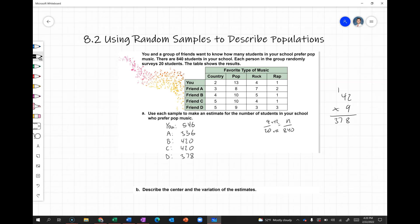So now we have you and your friends, five different people have these different random samples. If we want to get a better idea of what is representative of our population, the full school, we could then describe the center and the variation of the estimate. So you could find the mean, you could find the median, that sort of thing to describe the center.